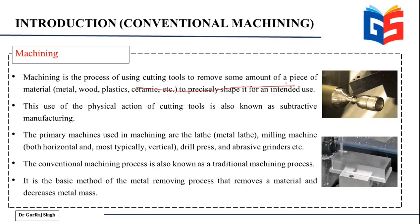This material can be wood, metal, plastic, or ceramic. Although in our courses we primarily focus on metals, machining can be performed on any available material. This is the use of the physical action of cutting tools, and it is also known as subtractive manufacturing — because we are removing some material from the original material.